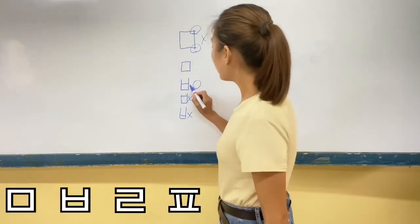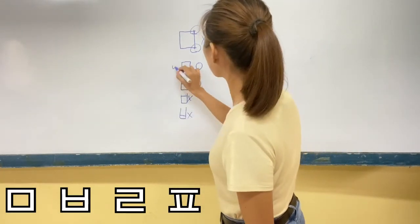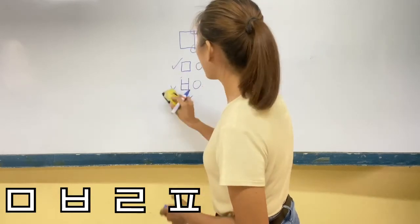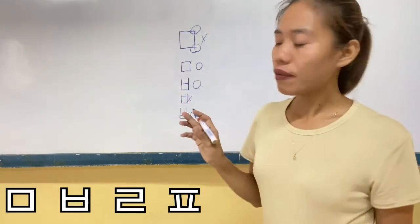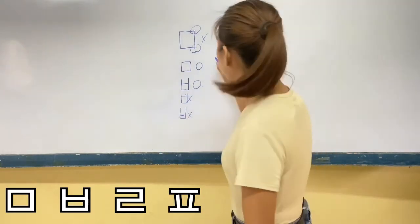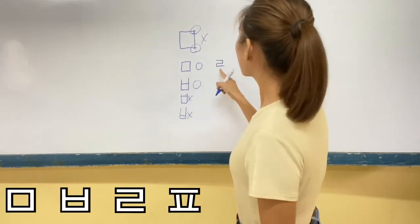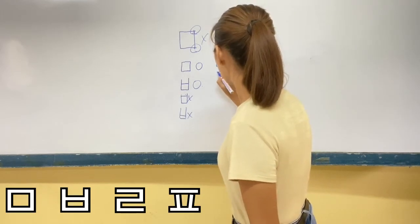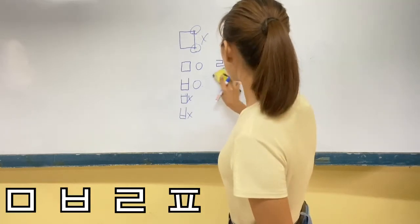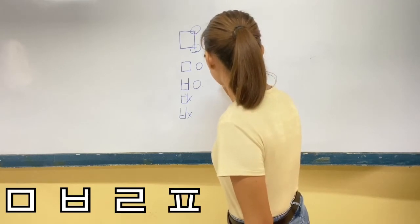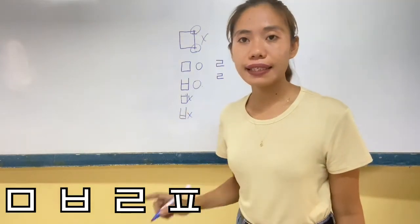By the way, a circle in the Korean context means correct, while an X of course means wrong. So it should be written this way — the circle means this is the correct one. In the Philippine context, we also use circle for correct. Now, when you write ㄹ, it will be like this — first stroke, second stroke, third stroke, with balance.